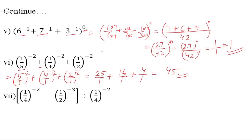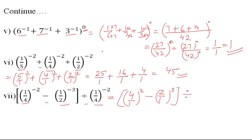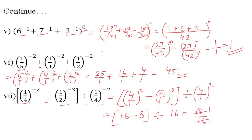Seventh: 1 upon 4 whole raise to the power negative 2 minus 1 upon 2 whole raise to the power negative 3, divided by 1 upon 4 whole raise to the power negative 2. Again apply the 7th law: we get 4 upon 1 whole raise to the power 2 minus 2 upon 1 whole raise to the power 3, bracket divided by 4 upon 1 whole raise to the power 2. That gives 16 minus 8 in the bracket, which is 8, divided by 16. This simplifies to 1 upon 2. That is the final answer.